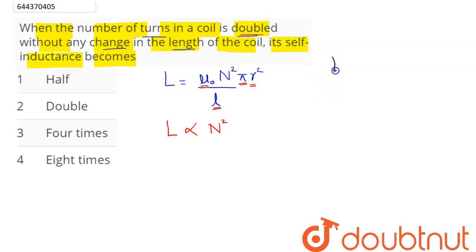So initial inductance is L, final inductance we need to find out. N₁ is N and N₂ here is 2N, whole square.